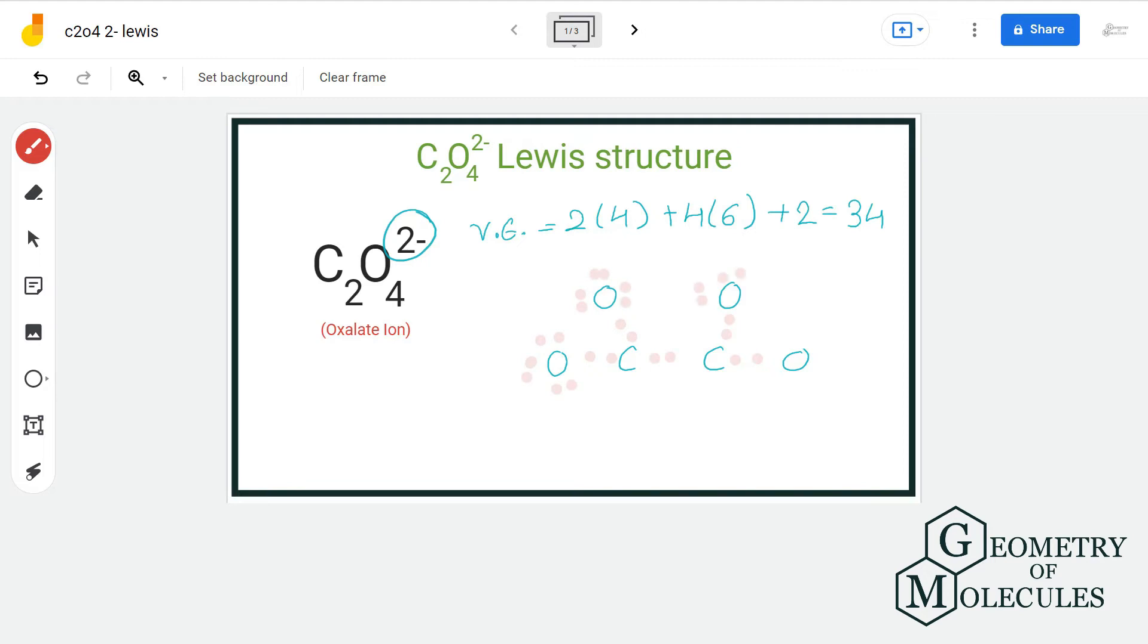But if we do that, then in this case, both carbon atoms will have incomplete outer shell and to avoid that, we will shift electron pairs from each oxygen atom to in between carbon and oxygen.